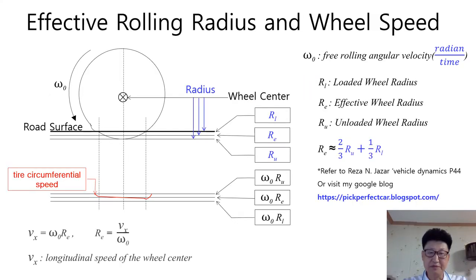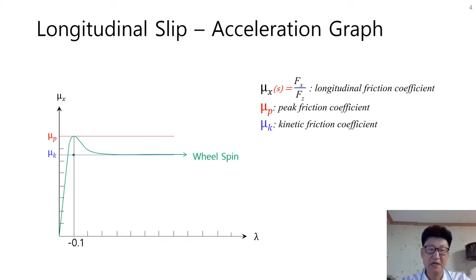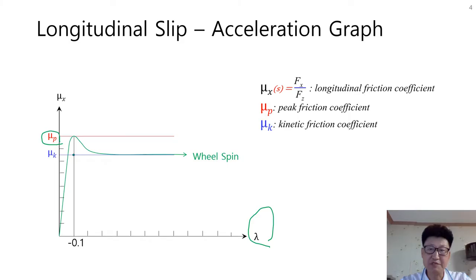In the previous video titled 'Perfect Car Longitudinal Slip,' I explained the loaded wheel radius, effective wheel radius, and unloaded wheel radius. I explained this graph describing the longitudinal friction coefficient as a function of longitudinal slip lambda. Mu_P is the peak friction coefficient, similar to static friction coefficient, and Mu_K is the kinetic friction coefficient. The traction force is maximized at the peak friction coefficient.